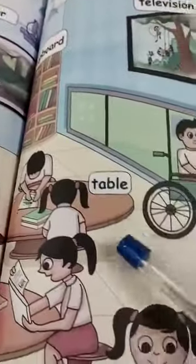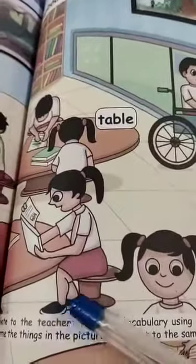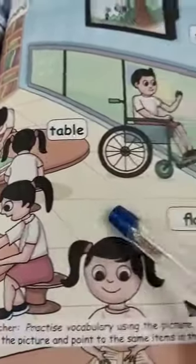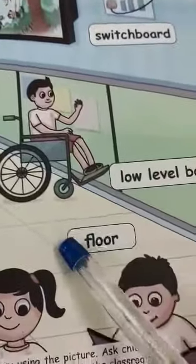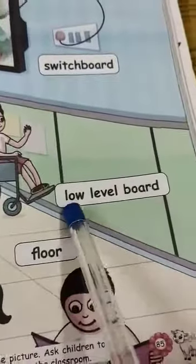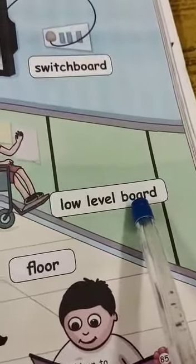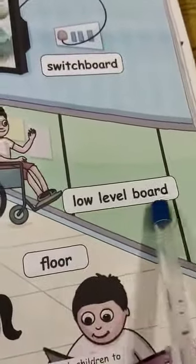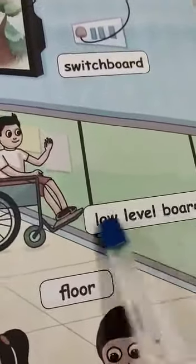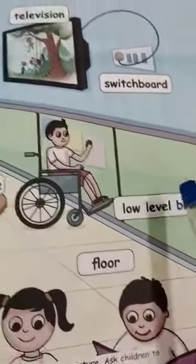Television. Yes, it is a television. And here, table. And what else can we see here? Floor — that means the ground. This is a low level board. You can see a low level cupboard — that is a low level board. I think we can see everything here.